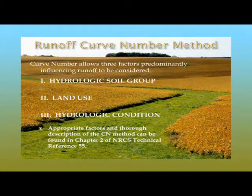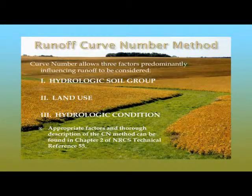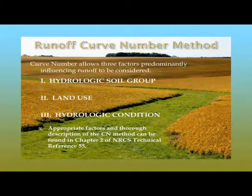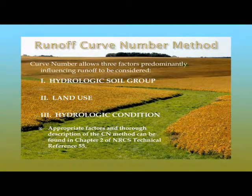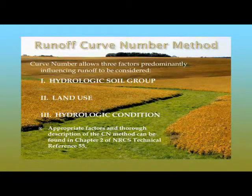As we start to calculate peak runoff rate, one of the primary factors is the runoff depth. We can calculate that with a method called the NRCS runoff curve number method. That takes into account the hydrologic soil group we have in our field, what's the land use — since different land uses have a different curve number — and what's the hydrologic condition of our land. All of those will influence that curve number.